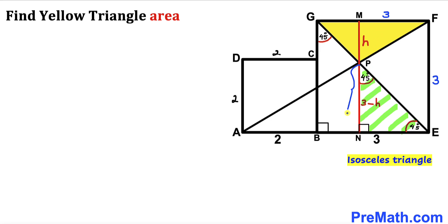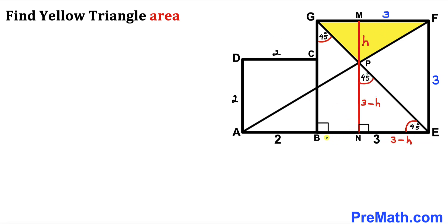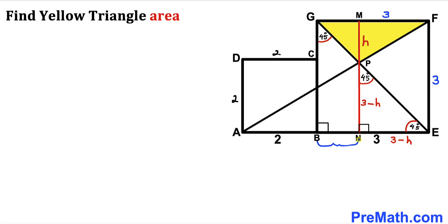We conclude that triangle ENP is also an isosceles triangle, since both base angles are 45 degrees. Therefore side NP equals side NE. If NP is 3 minus h, then NE is 3 minus h as well. Since the whole length BE is 3 units and NE is 3 minus h, then BN equals 3 minus (3 minus h). Distributing the negative sign: 3 minus 3 plus h, which simplifies to h. So BN equals h.